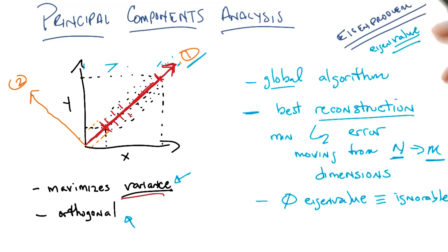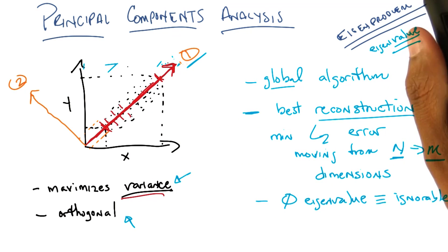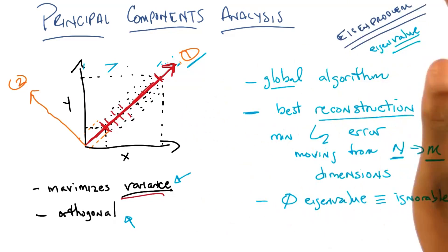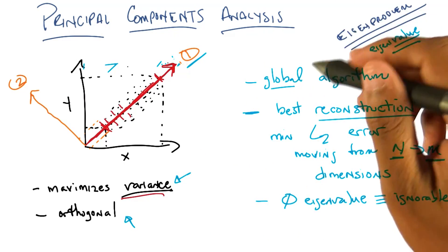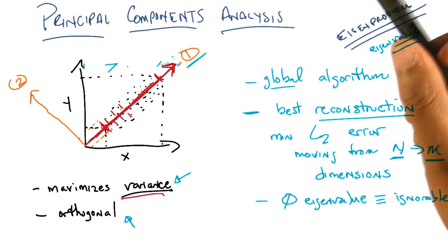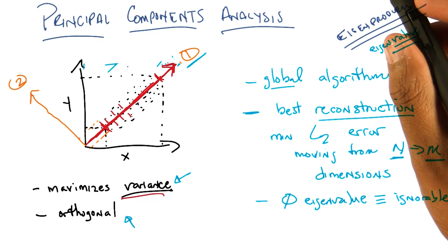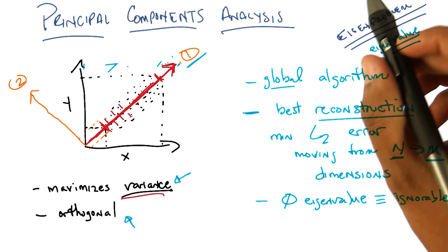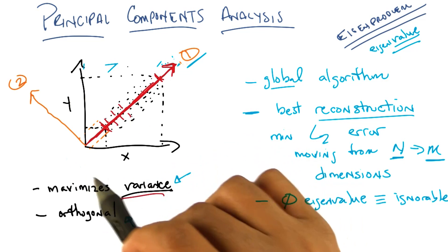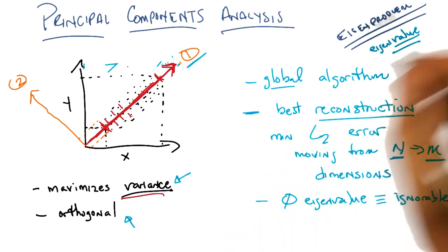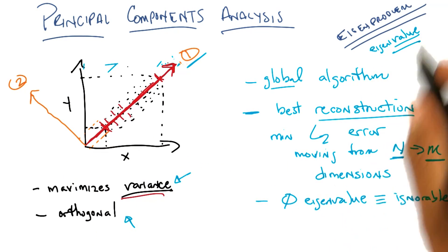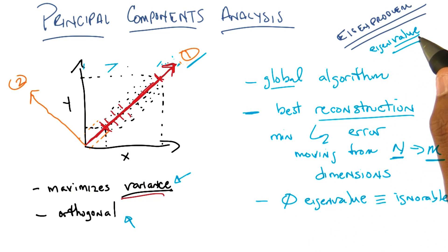So that's basically PCA — it's got all these neat properties. Let me summarize and add a couple more. It is a global algorithm. It gives you the best reconstruction error, which is a very nice thing to have. And it tells you which of the new features you get out are actually important with respect to reconstruction by simply looking at their corresponding eigenvalues.